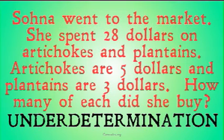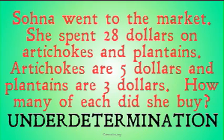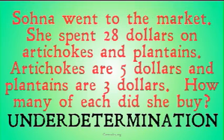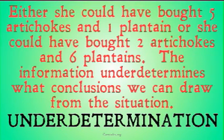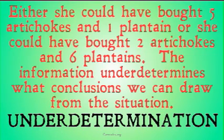However, imagine this scenario. Sohna went to the market. She spent $28 on artichokes and plantains. Artichokes are still $5 and plantains are $3. How many of each did she buy? If you think about this problem for a second, you should soon find that the information we are given does not determine a single solution. Either she could have bought five artichokes and one plantain, or two artichokes and six plantains. The information we are given under-determines what conclusion we can draw from the situation. That is simply what underdetermination is — when the information we are given does not determine what conclusions we can draw.